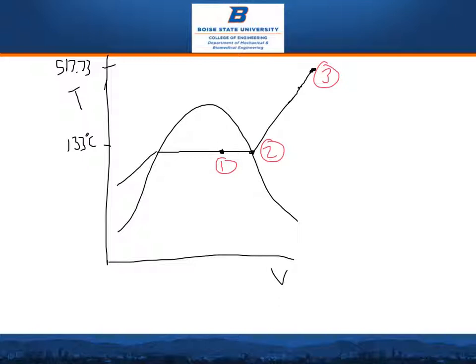With the TV diagram, it shows what happens to the water between points 1, 2, and 3. At state 1, it is underneath the curve, which means it's a saturated mixture, but closer to being a saturated vapor. At state 2, it is completely saturated vapor. And at state 3, it is superheated vapor.